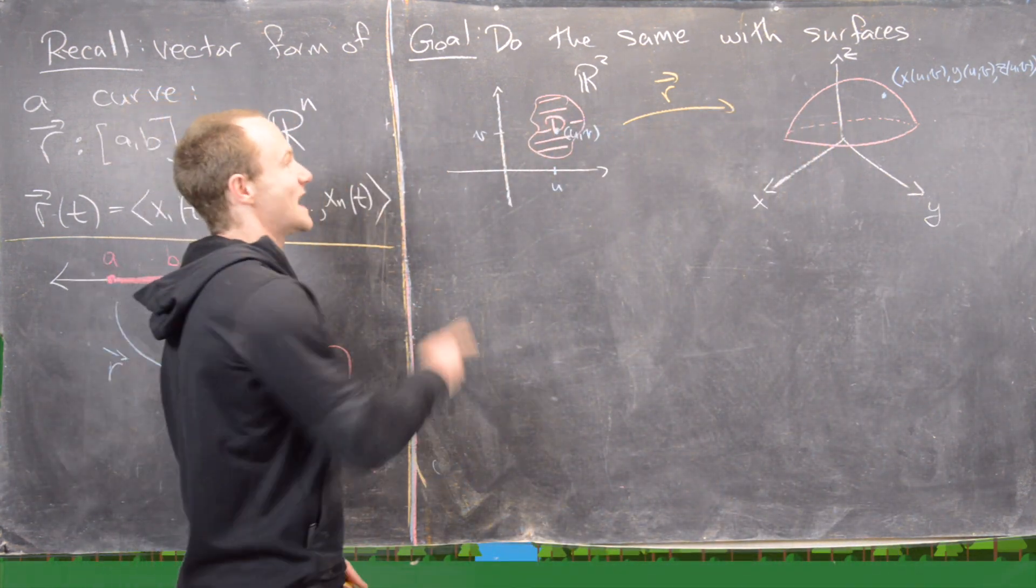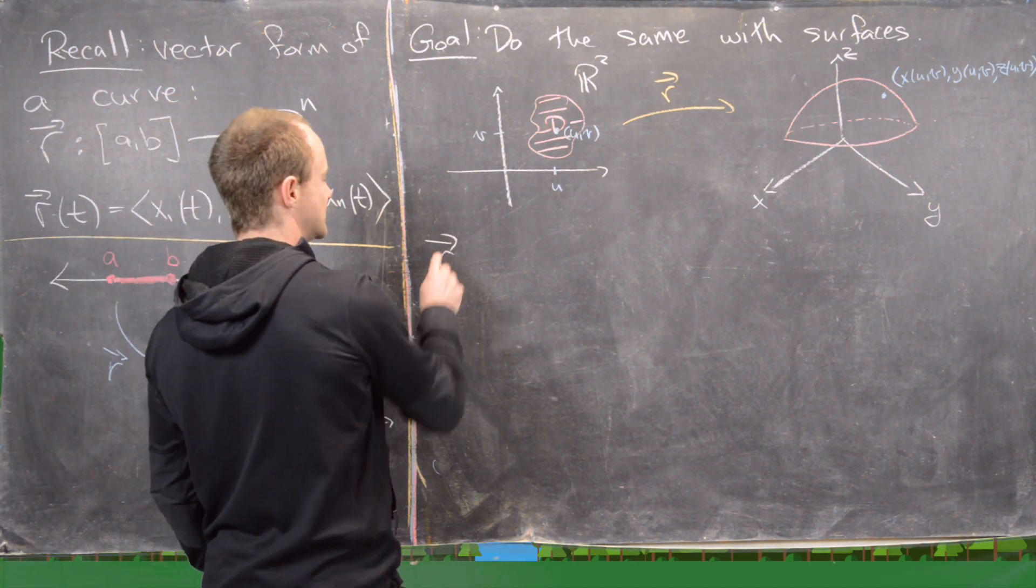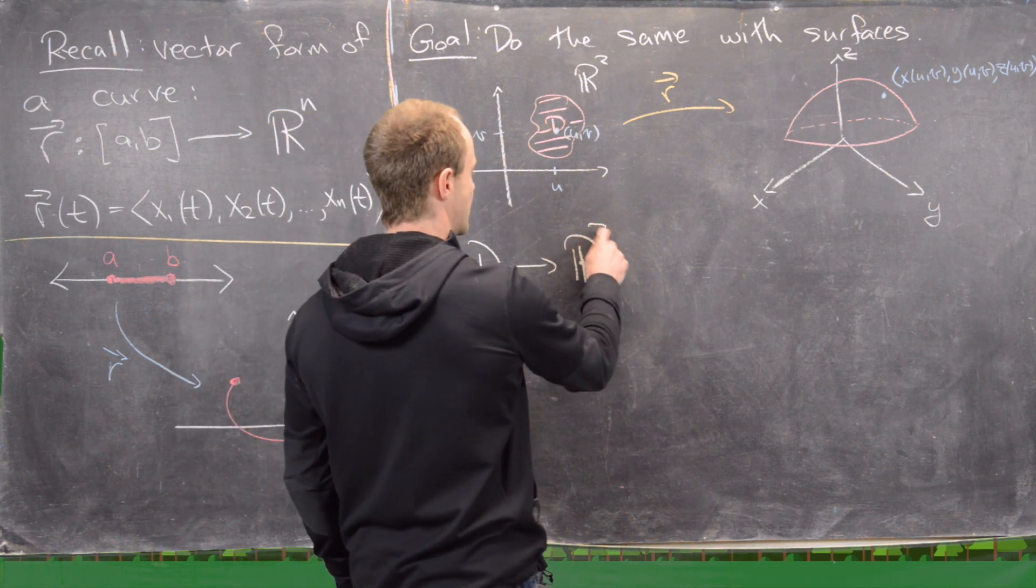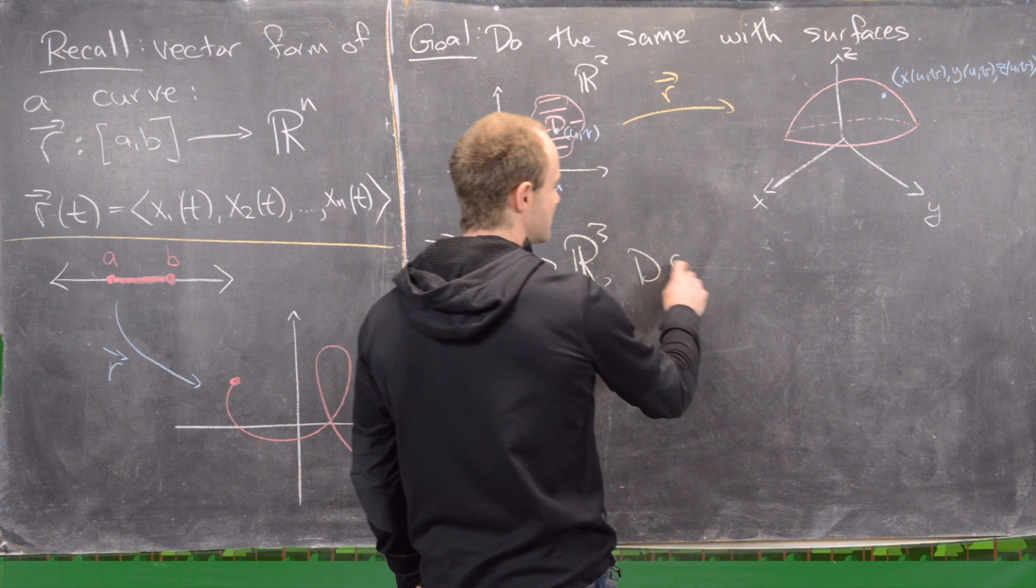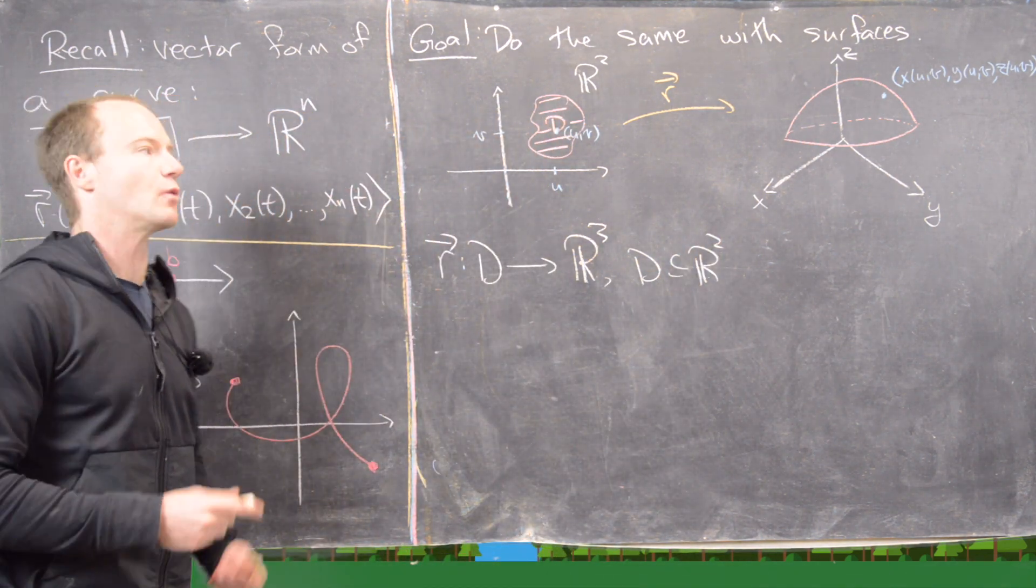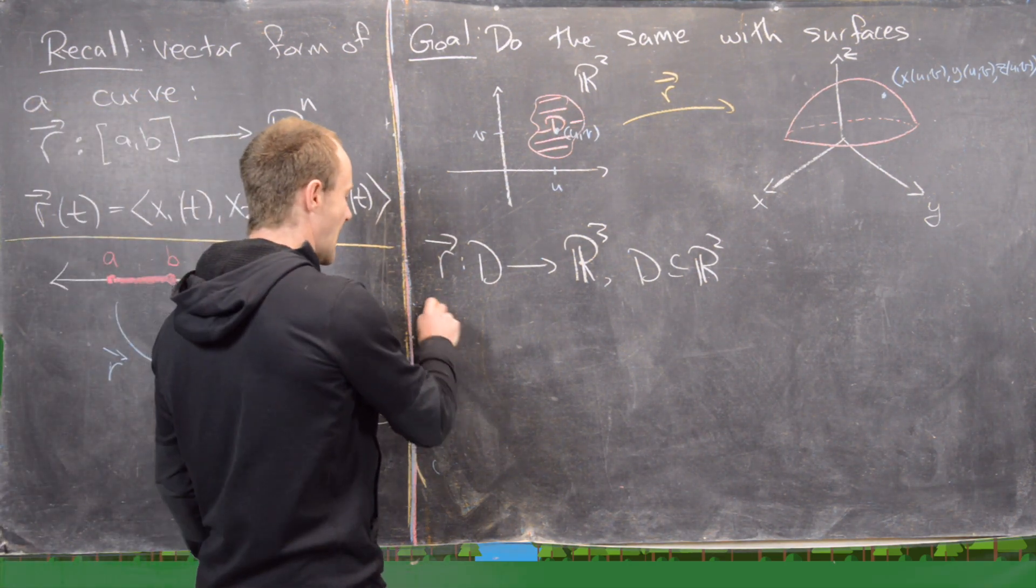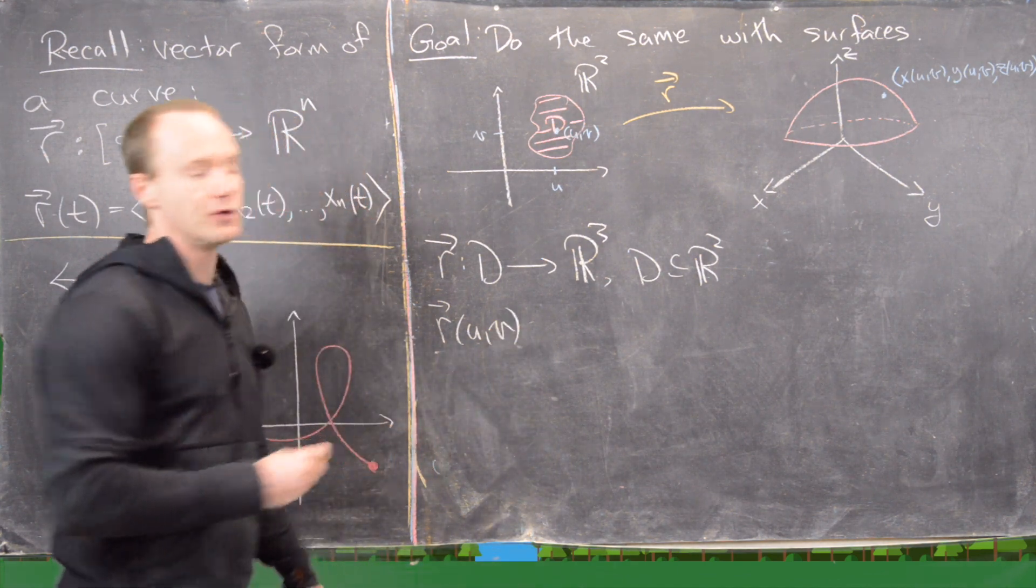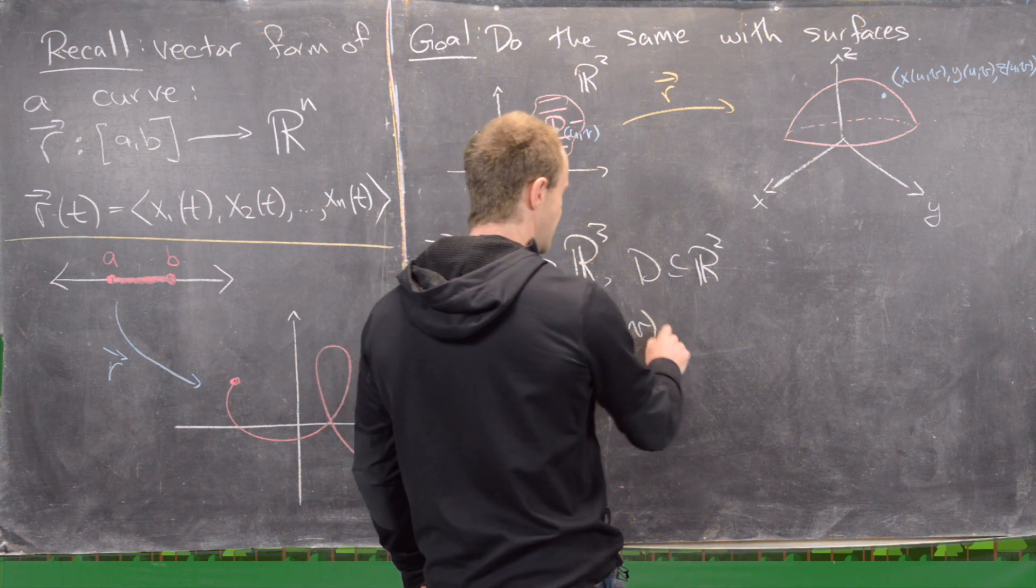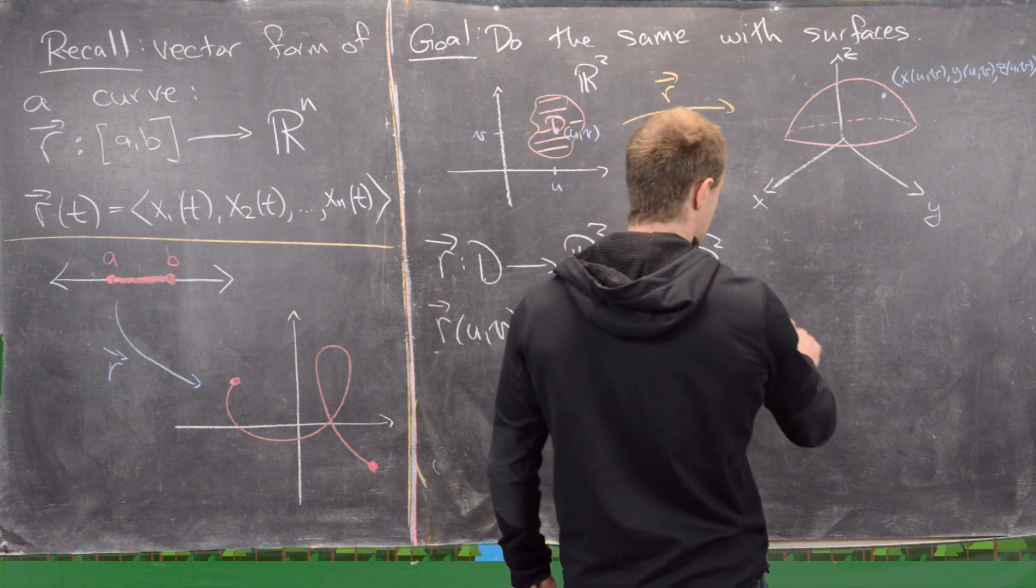So what this tells us is that this kind of setup will be given by the following type of function. So we have r, which goes from D into R^3, and I should say here that D is a subset of R^2. And generally, we want this thing to be one-to-one as well, but, you know, I won't really write that down. And what we have is we have two inputs over here, u, v, and then we have three outputs. So we have x(u,v), y(u,v), and z(u,v).